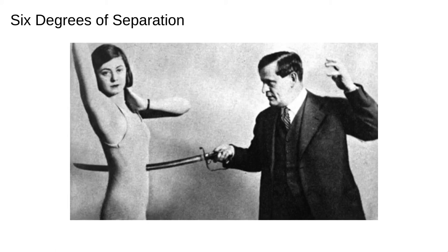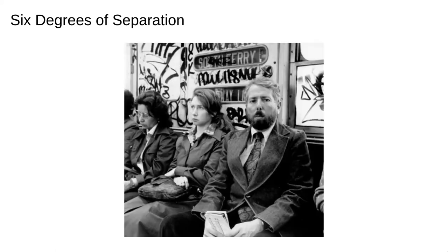The first experiment which really popularised this idea was Stanley Milgram's small world experiment. Stanley Milgram is a very well-known American psychologist, shown here. His basic idea was to choose individuals at random in the US cities of Omaha, Nebraska and Wichita, Kansas to be the starting points, and Boston, Massachusetts to be the end point of a chain of contacts. Participants were sent letters detailing the study's purpose, a signing roster, and basic information about a target contact person in Boston. They were asked whether they personally knew the contact person, and if so, to forward the letter directly to them. If they did not know the target, the participant was to forward the letter to a friend or relative who was more likely to know the target.